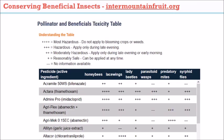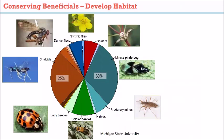The website intermountainfruit.org has a table listing every recommended product and its toxicity to pollinators and beneficials. One star means a fairly non-toxic product; four stars means something to avoid if possible. You can also take steps to bring beneficials into your orchard — and many of the insects discussed need pollen and nectar to lay eggs and mate, so providing that resource is key.